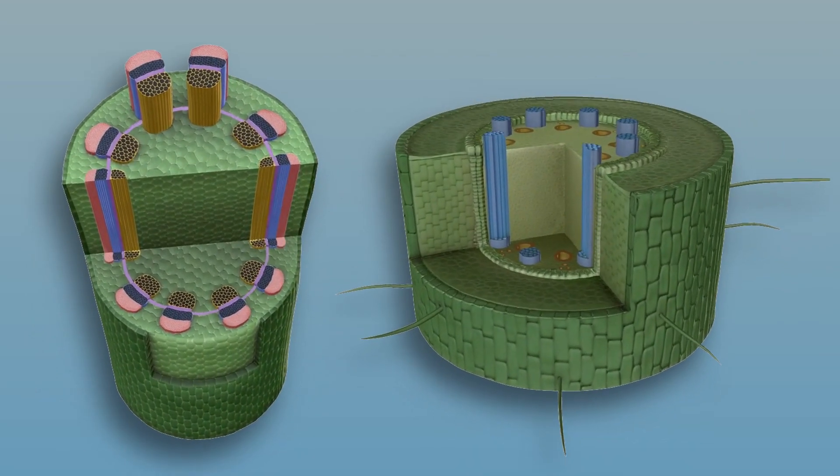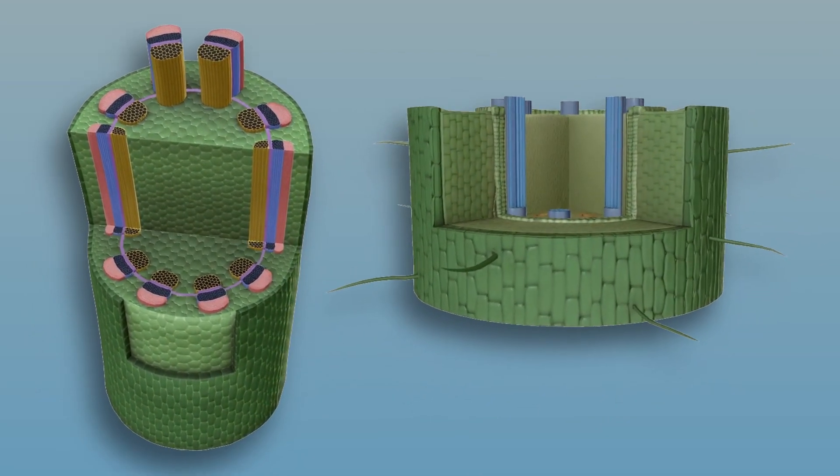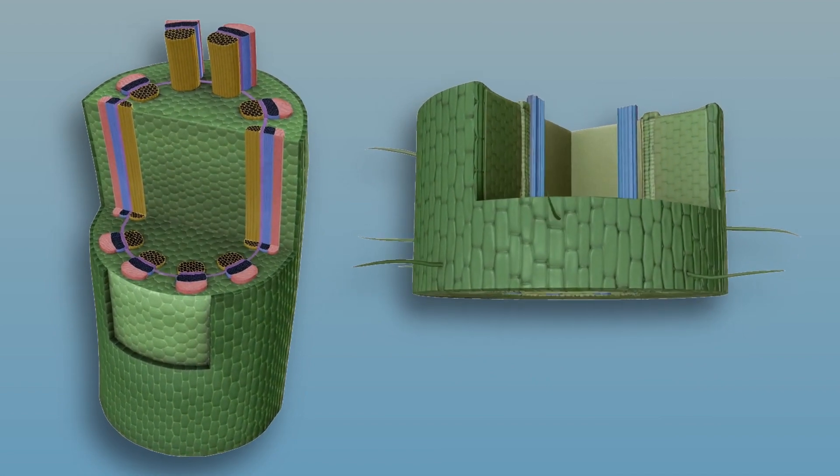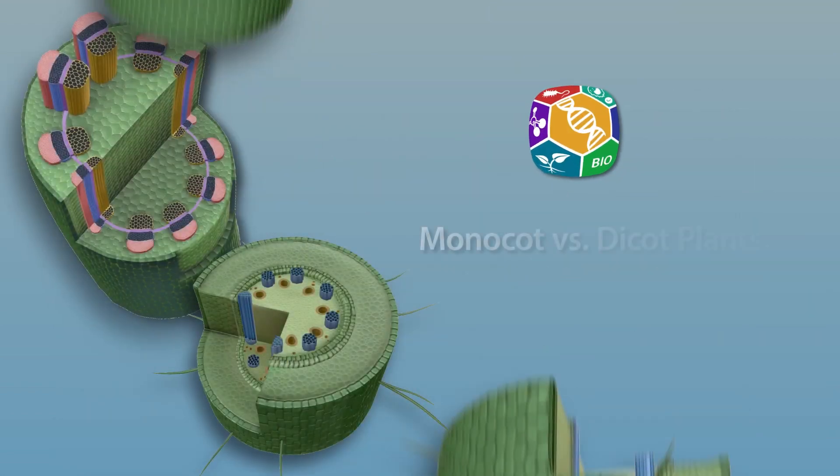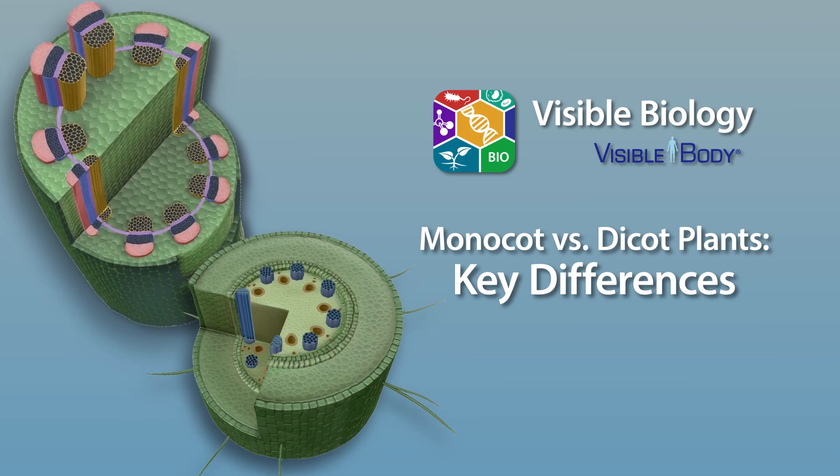Most flowering plants can be classified as monocots or dicots. How can you tell which is which? Look for these key differences in the structures of their roots, stems, and leaves.